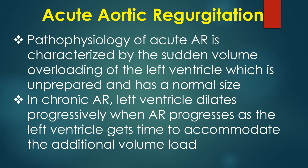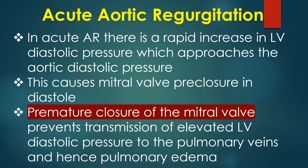Pathophysiology of acute AR is characterized by the sudden volume overloading of the left ventricle, which is unprepared and has a normal size. In chronic AR, the left ventricle dilates progressively when AR progresses, as the left ventricle gets time to accommodate the additional volume load. In acute AR, there is a rapid increase in LV diastolic pressure which approaches the aortic diastolic pressure.